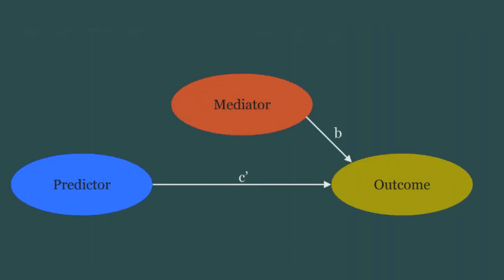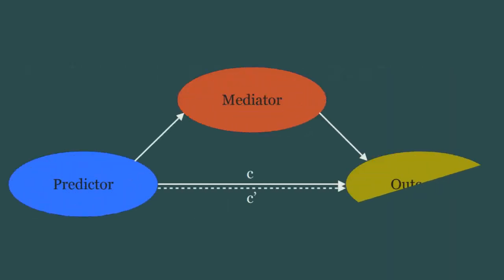In said final step, you run a regression model in which you have both the predictor and the mediator predicting the outcome, which gives us the c-prime path. Now you compare the c-path to the c-prime path. If in the latter the slope drops to non-significance, congratulations, you have mediation.